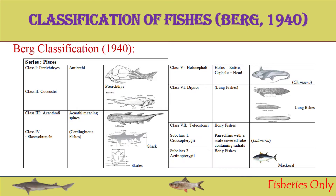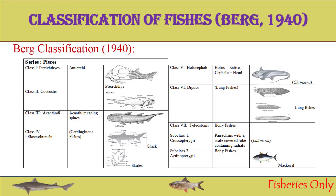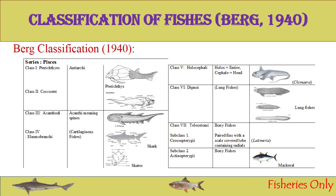The sixth class, Dipnoi, are also called lung fishes — they can respire underwater as well as outside water. Examples include Australian lung fish and South African lung fish. The seventh class, Teleostomi, has an ossified endoskeleton and two subclasses: Crossopterygii, with the example of Latimeria, and Actinopterygii — the normal bony fishes — with examples such as catfish, mackerel, and others.